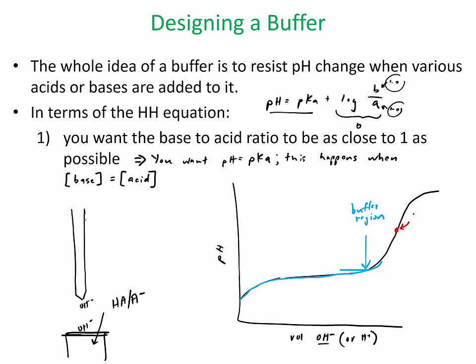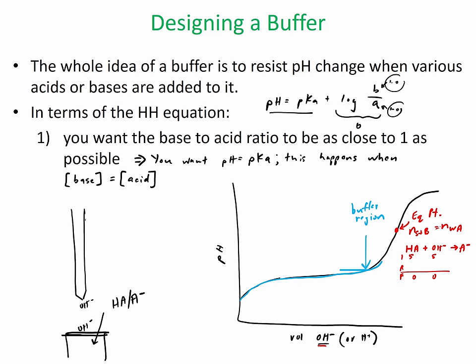This right here is the equivalence point in a titration. This is when your moles of strong base — because we're adding a base over time — equals your moles of weak acid. If you did a buffer problem and set up your IRF table, so you're adding a strong base to your weak acid, it's going to make the conjugate base. Let's say this is 5 moles and this is 5 moles. On your F line, it's going to be 0 and 0 — so there's no buffer at the equivalence point.